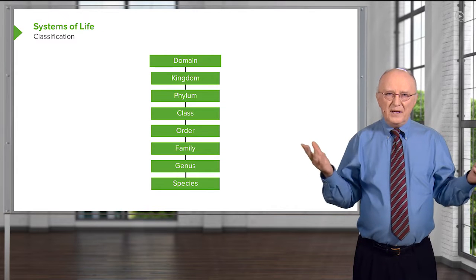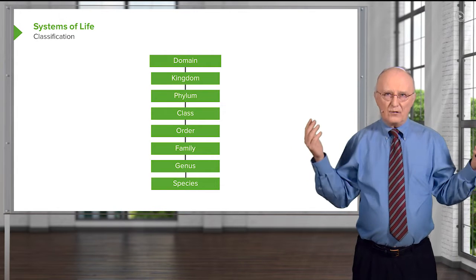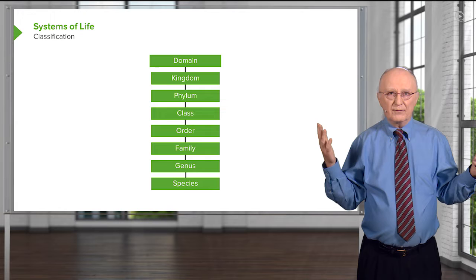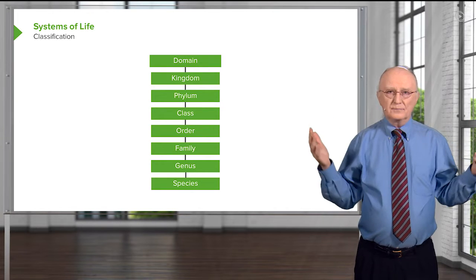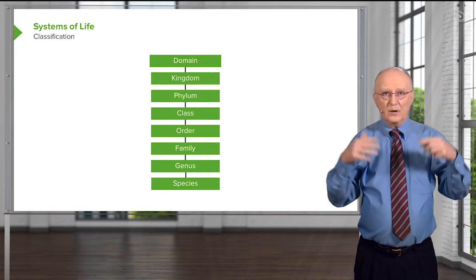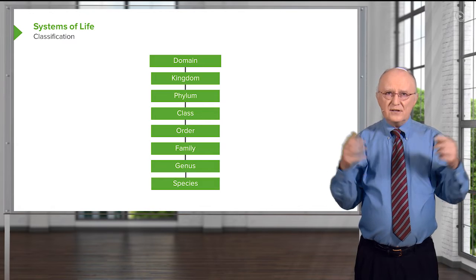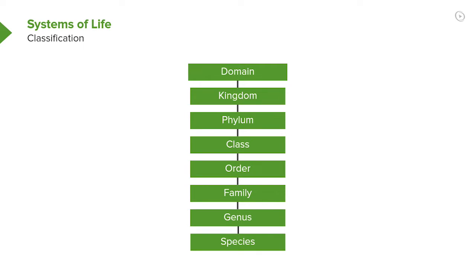Human beings are people who organize and categorize things, and it's only natural therefore that we should be categorizing life systems as well. One of the things that has happened in the organization of life systems is to create a hierarchical scheme. On the screen you can see one hierarchical scheme that is used to describe essentially every living organism on earth, starting at the top with the most broad view and narrowing down as we go down through the names.